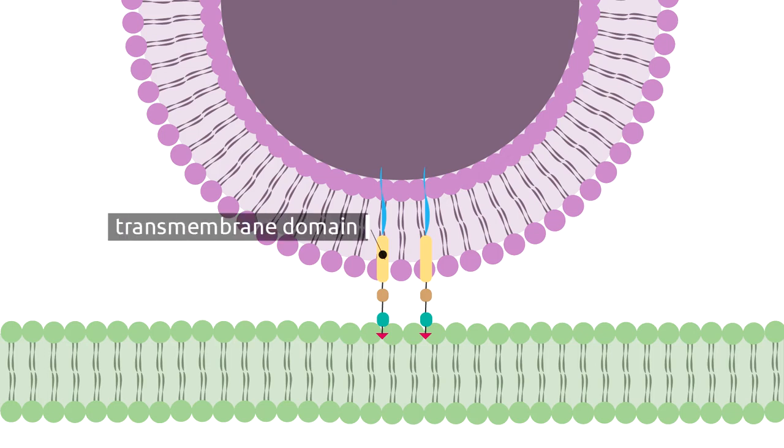In order to dock the viral membrane to the target, the fusion protein will undergo further conformational changes forming the pre-hairpin intermediate state, when the fusion peptide is inserted into the target membrane.